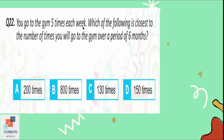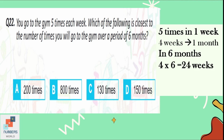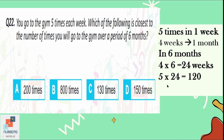Question number 22: you go to the gym five times each week. Which of the following is closest to the number of times you will go to the gym over six months? There are 4 weeks per month, so 4 × 6 = 24 weeks in six months. Multiplying 5 times per week by 24 weeks gives 120 visits. Looking at the options, 130 is closest to 120. Option C is correct.